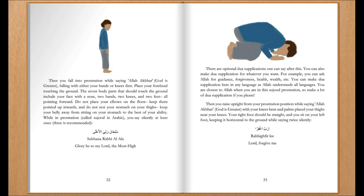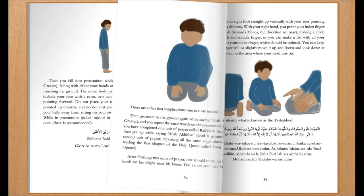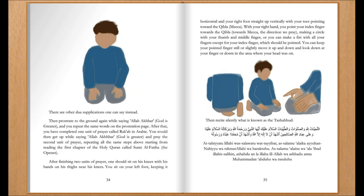Then you raise upright from your prostration position while saying 'Allahu Akbar — God is greater,' with your knees bent and palms placed on your thighs near your knees. Your right foot should be straight and you sit on your left foot, keeping it horizontal to the ground, while saying twice silently a supplication seeking forgiveness. There are other dua supplications one can say instead. Then prostrate to the ground again while saying 'Allahu Akbar — God is greater,' and repeat the same words in prostration: 'Subhana Rabbiyal A'la — Glory be to my Lord, the Most High.' After that, you have completed one unit of prayer called raka in Arabic. You would then get up while saying 'Allahu Akbar — God is greater,' and pray the second unit of prayer, repeating all the same steps above starting from reading Surah Al-Fatiha, the opener.